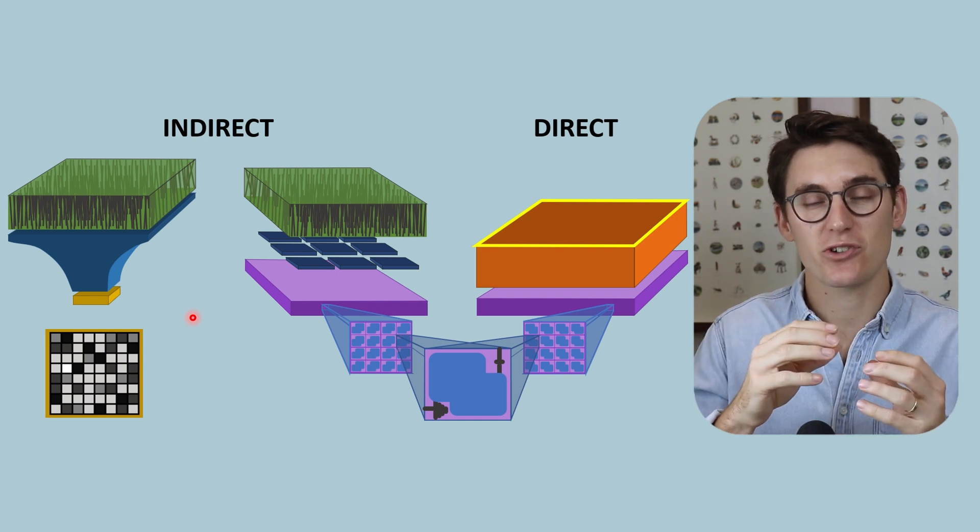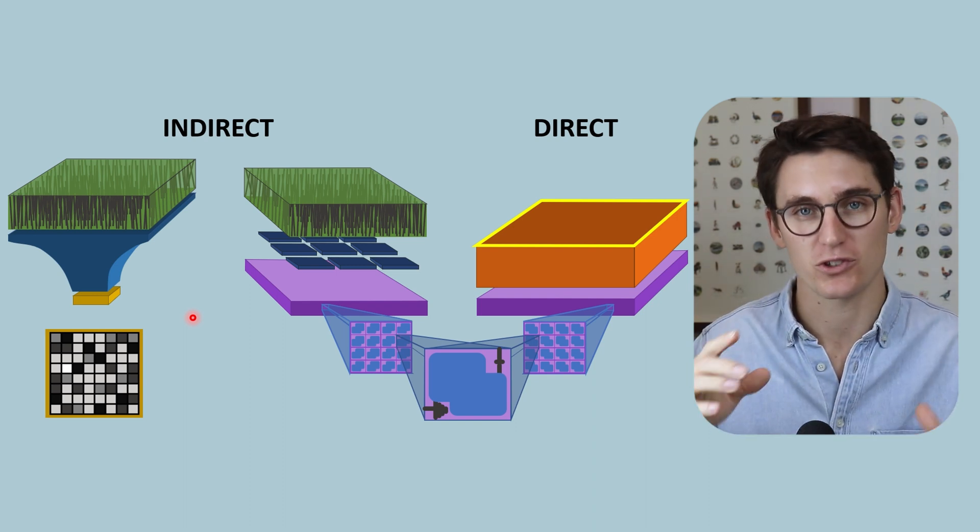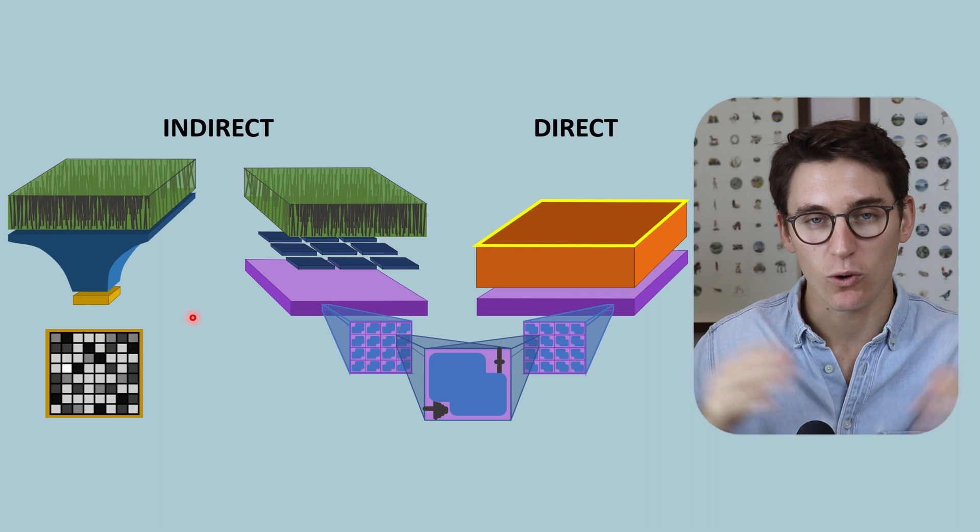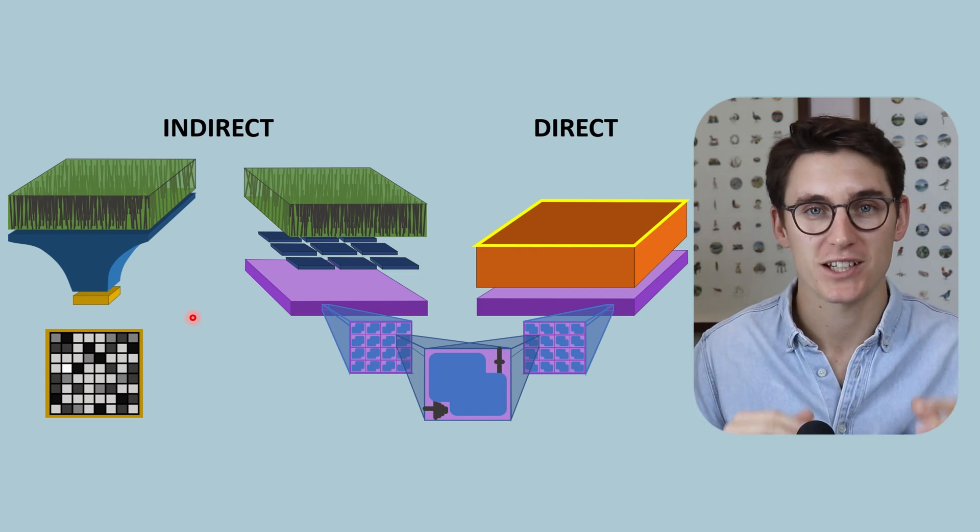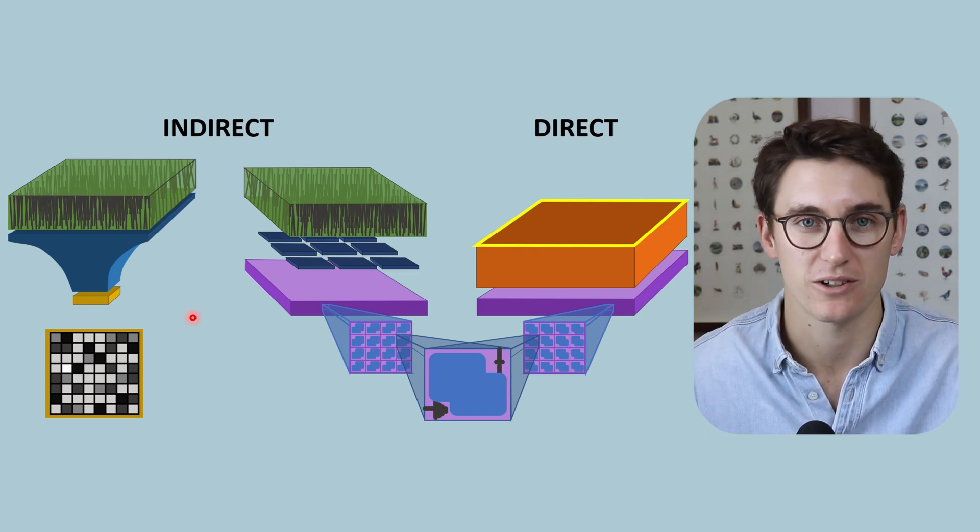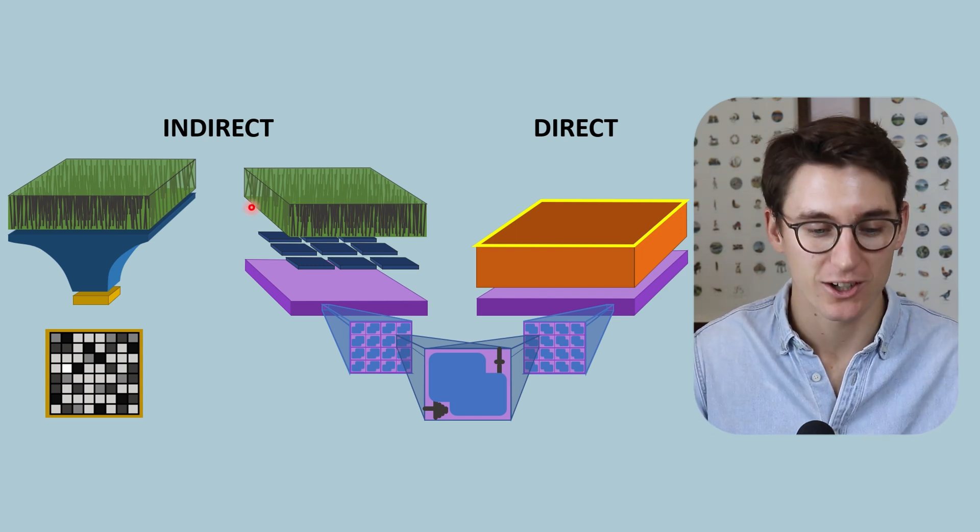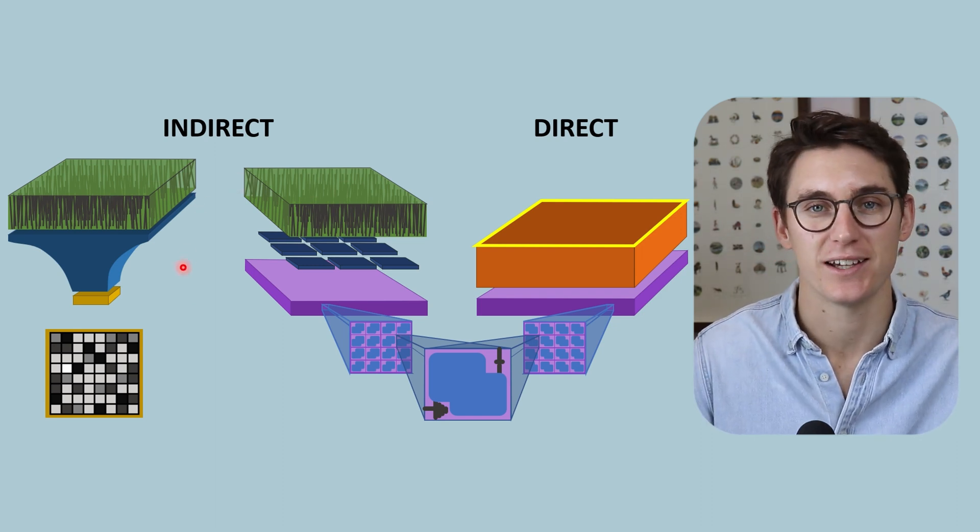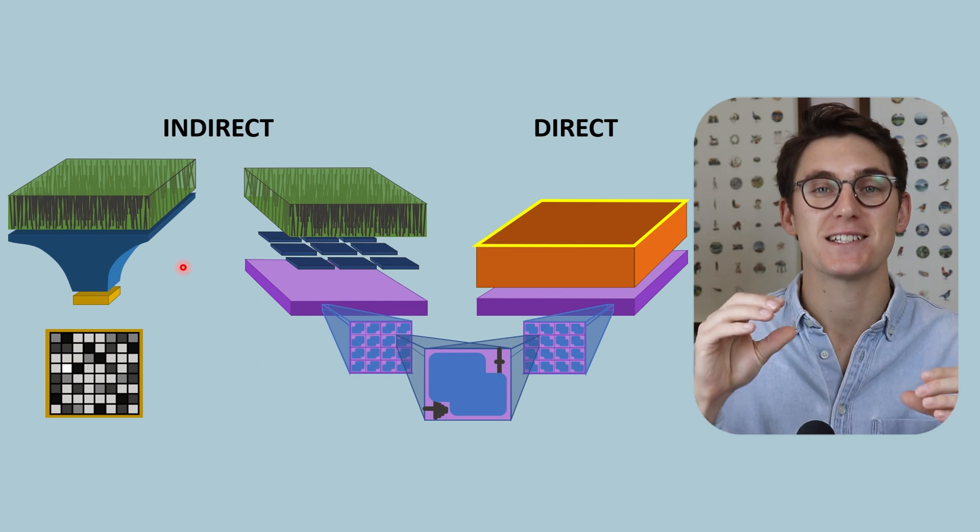And that intensifying screen created multiple light photons from one x-ray photon. And all of that light energy was needed to deposit silver atoms onto our film itself. So let's take a moment now to look at this scintillation layer and see how it differs from the intensifying screen that we used in our screen film radiography.